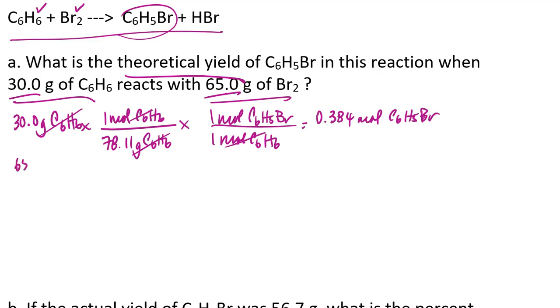Now I'm going to repeat that calculation, but this time starting with the 65 grams of bromine. So I'm going to divide by the molar mass of diatomic bromine, which is 159.8 grams. And convert from moles of bromine to moles of the bromobenzene. And again, since the coefficients are 1 understood for both, that mole ratio is 1 to 1.